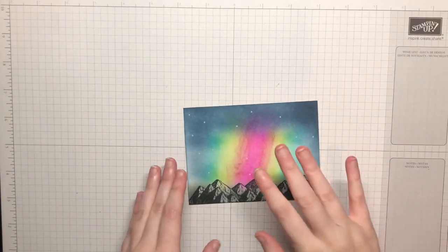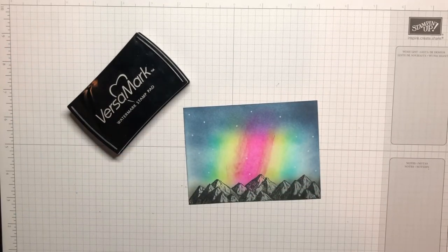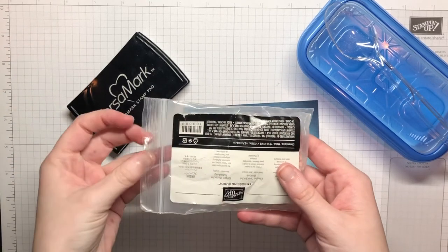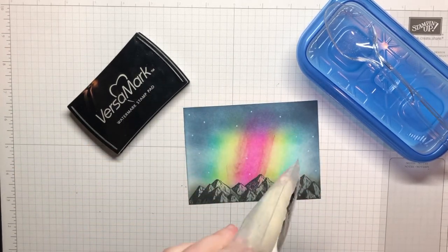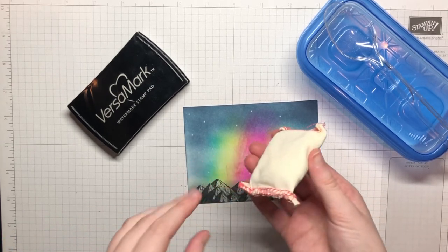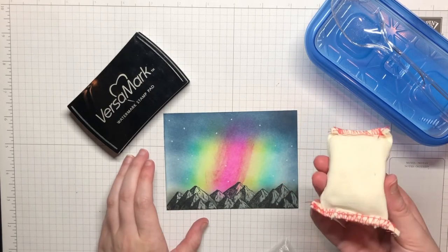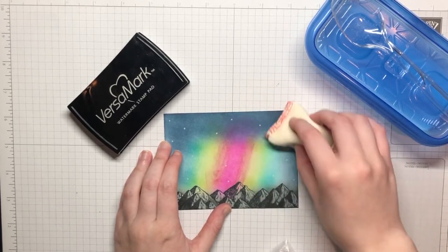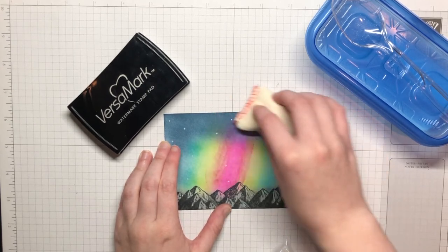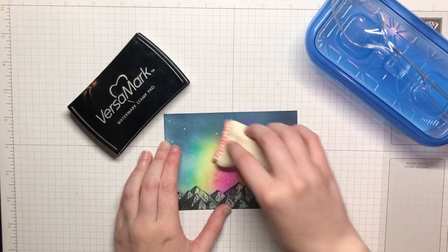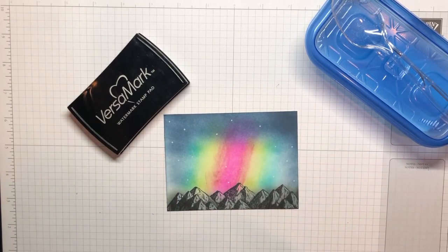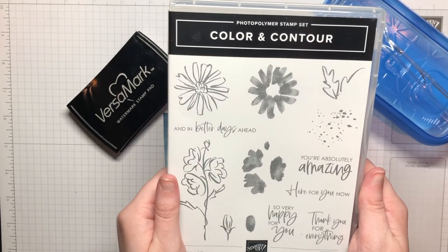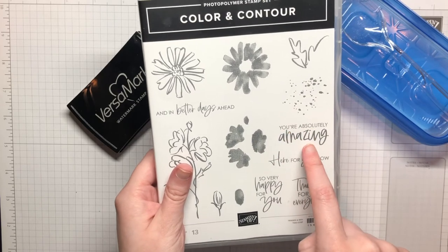All right now that those are all clean I've got my piece back in here and I'm going to bring out my Versamark, my white embossing powder which I store in this little Tupperware container, and I'm also going to bring out my embossing buddy. Stampin Up doesn't sell the embossing buddy anymore but I'm sure you can find it on Amazon or at a local craft store. This is important because there's already been ink on the paper. You want to make sure that there is no static and the embossing buddy removes that static. And the sentiment I'm using is from this color and contour stamp set which is coming up on May 4th. I'm using this 'you're absolutely amazing' stamp.